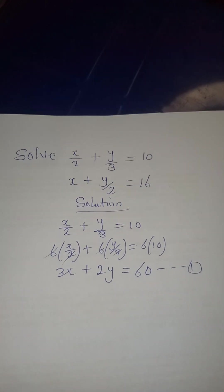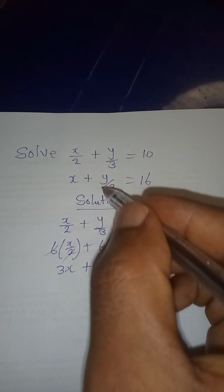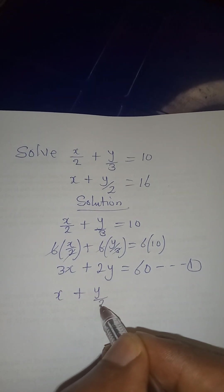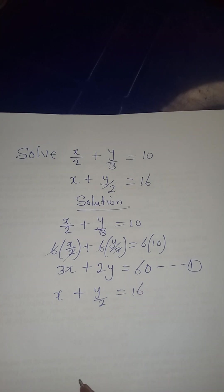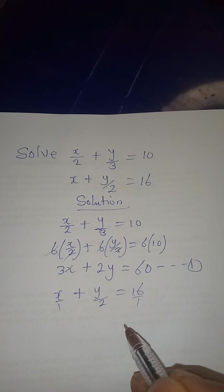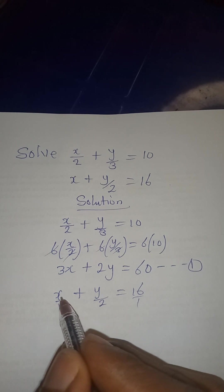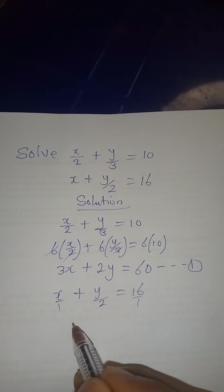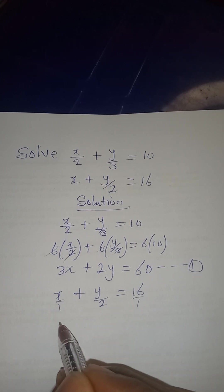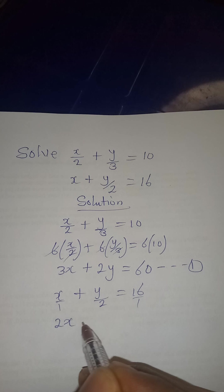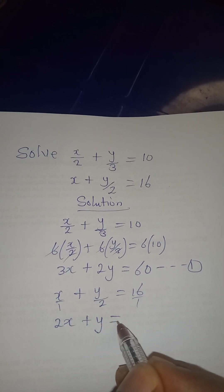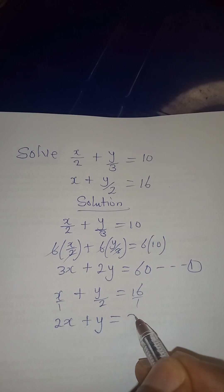Then from equation 2, we are having x plus y over 2 equal to 14. And we believe that here is over 1, here is over 1, so multiply each of these by 2. So it's going to be 2 times x, and that is 2x, plus the 2 will cancel itself from here, so we'll have ordinary y, which is equal to 2 times 14.